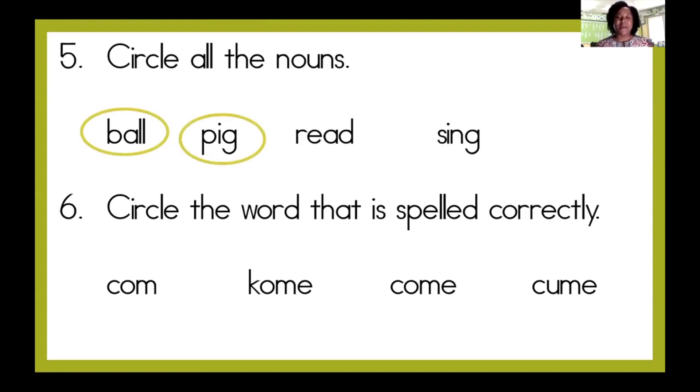Circle the word that is spelled correctly. Now, I'm looking at these words and they're four words. If I sound them out, they're all going to say the same sound. Come. Come is one of our sight words, and we know our sight words. Come is spelled C-O-M-E.